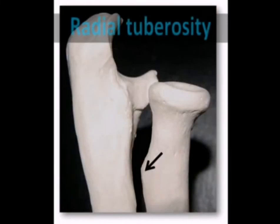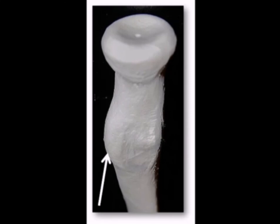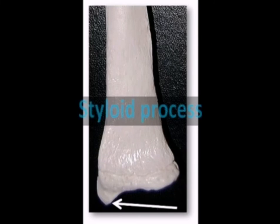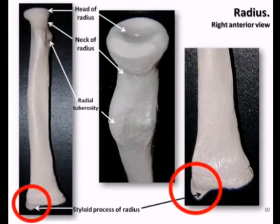Just inferior to the neck is the radial tuberosity — a rough patch of bone that serves as an attachment point for the tendons of the biceps brachii muscle. The radius widens at its distal end to form the tooth-like styloid process on the lateral side, which you can actually feel just proximal to the thumb. The styloid process is an attachment point for the brachioradialis muscle as well as the radial collateral ligament to the wrist.